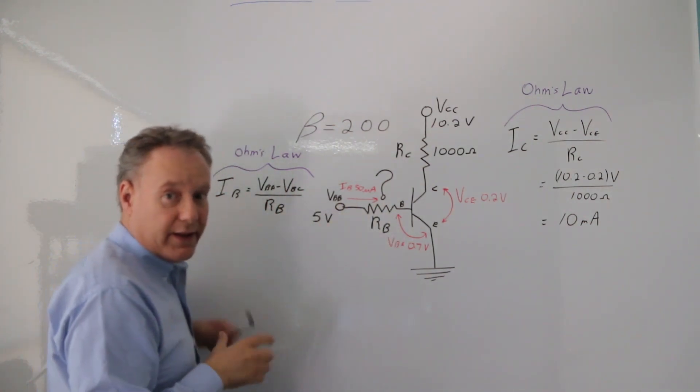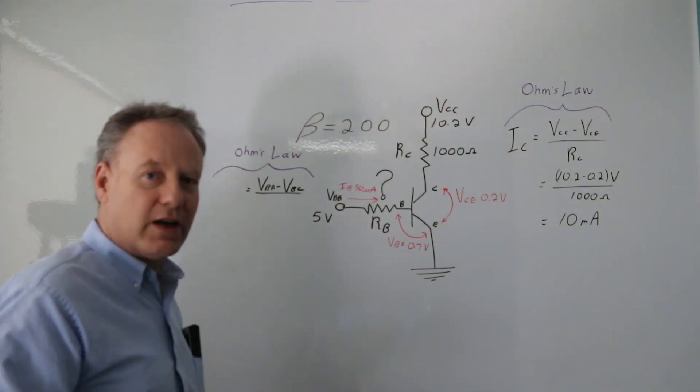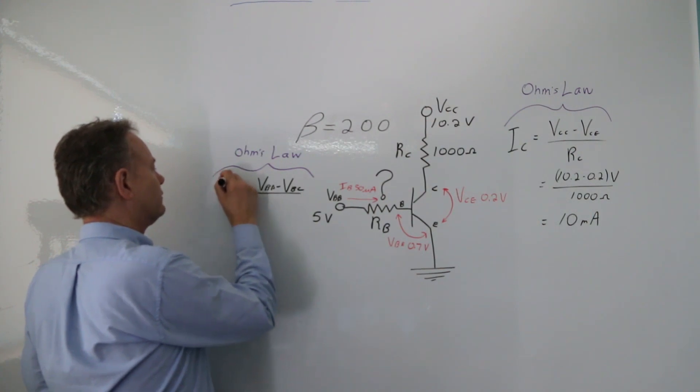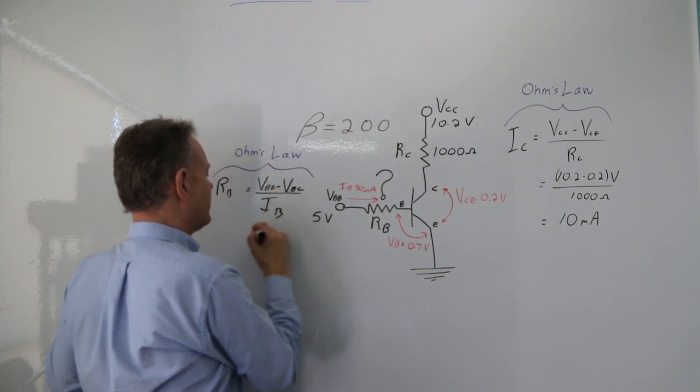But I don't know the resistance, but I know this. So what I'm going to do is just rearrange this. So I'm going to write my RB here and my IB here. So I've just rearranged that equation.